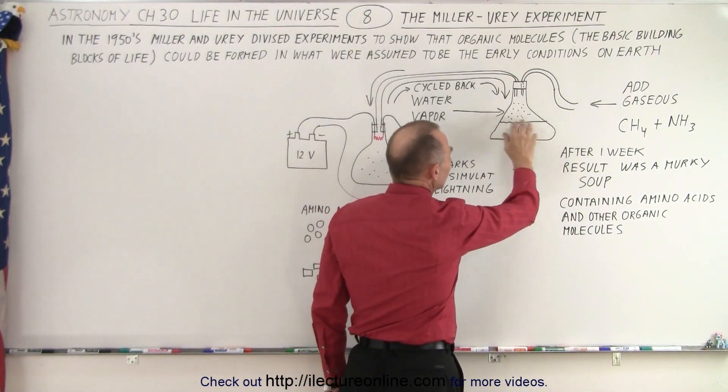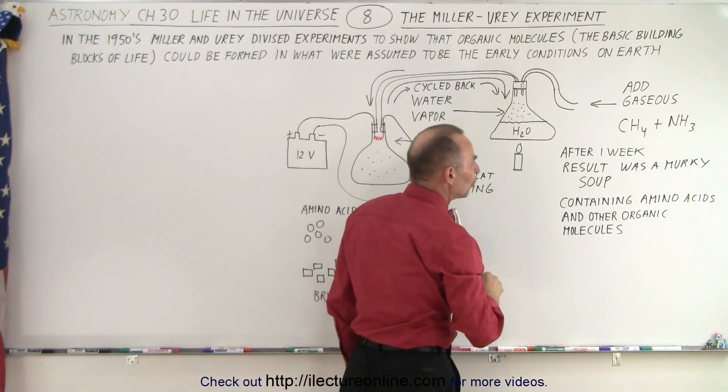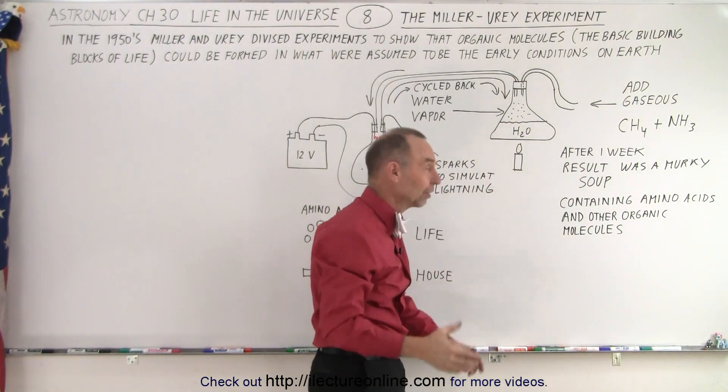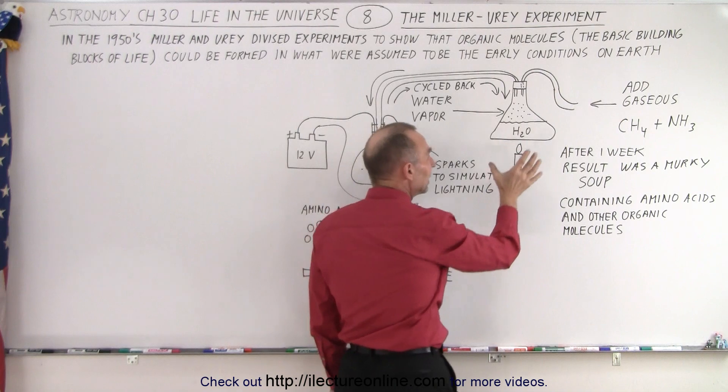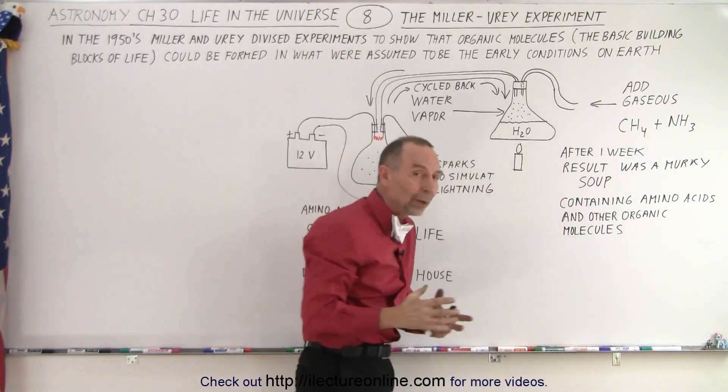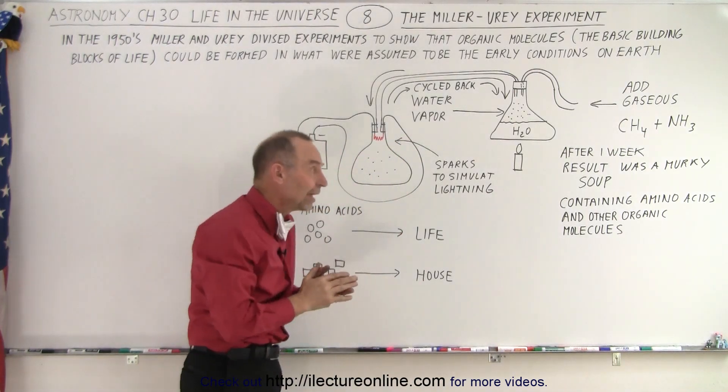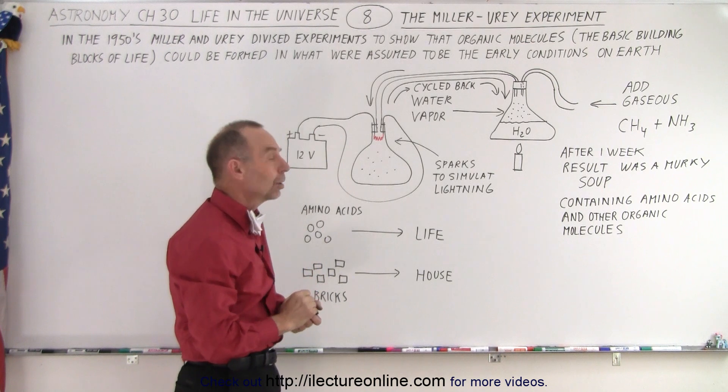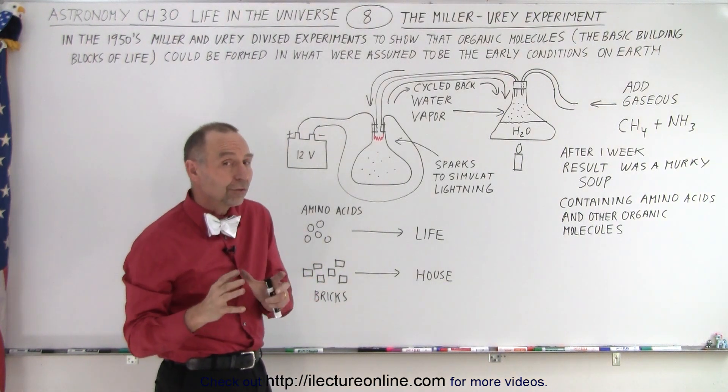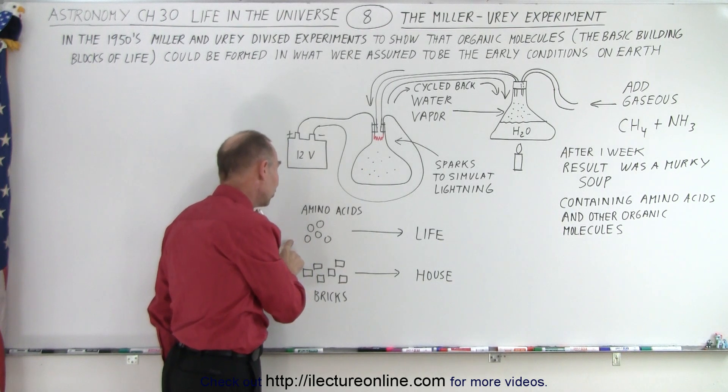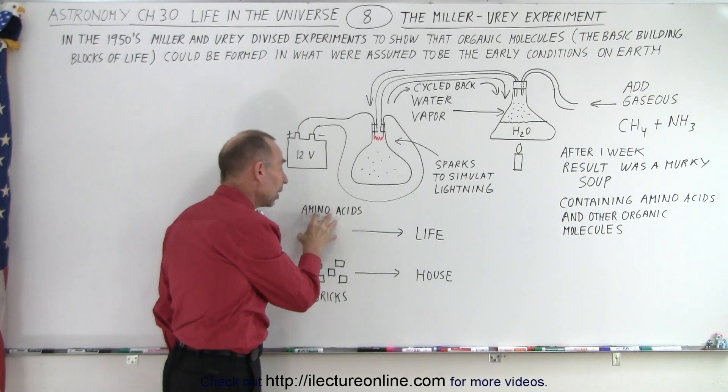As the days went by, a dark mercury solution began to appear in here. And so then when they finally finished the experiment after a week, they went in and looked at what it contained within that flask and sure enough they found amino acids and other organic molecules. Now, that was earth shaking at the time because we all knew that amino acids are indeed the basic building blocks to life.